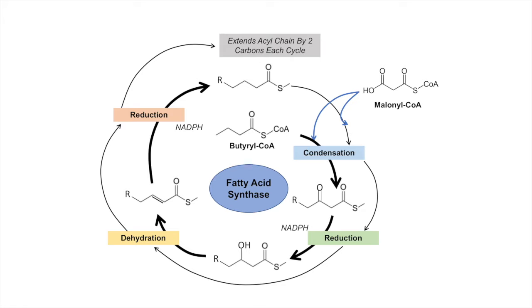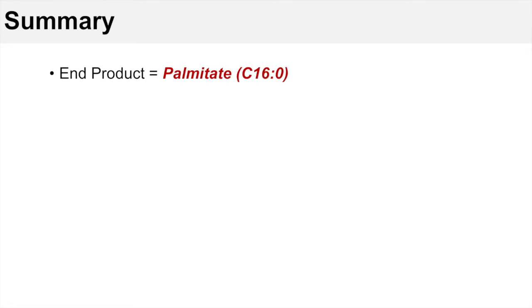This process stops when we reach the final product, which is palmitate — a 16-carbon saturated fatty acid with zero double bonds. The total number of cycles is seven, because two carbons come from malonyl-CoA each cycle times seven gives 14, and we started with the two-carbon acetyl-CoA, totaling 16 carbons.